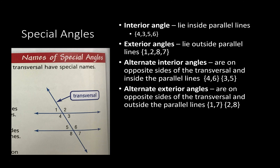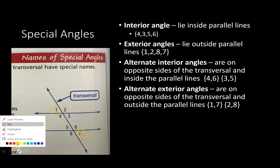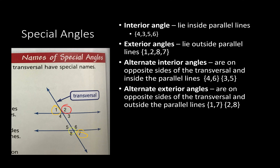Next up is alternate exterior angles — we're going on alternating sides of the exterior angles. So, one and seven would be alternate exterior angles, and two and eight would be the other alternate exterior angles.